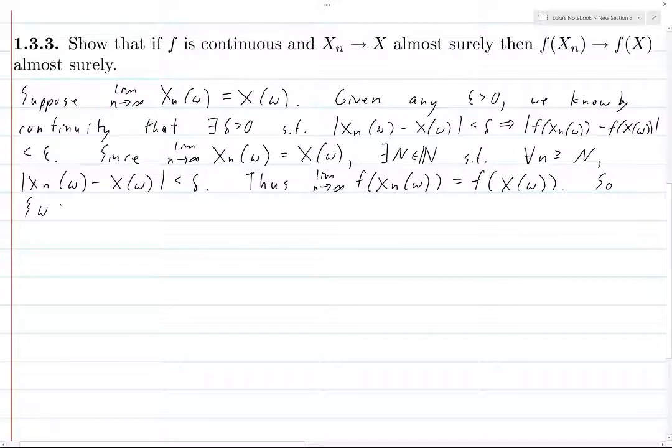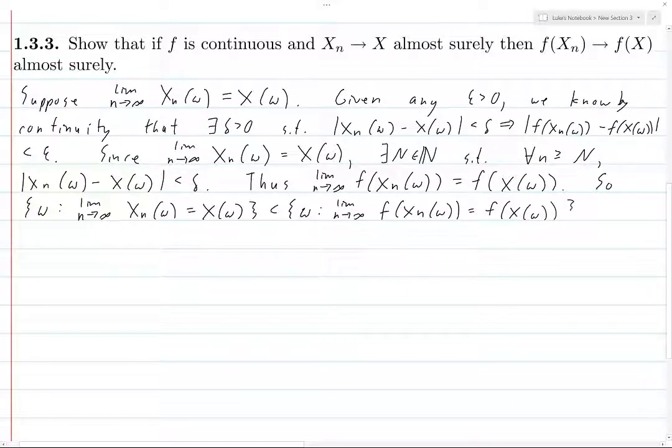So what does this tell us? This tells us that if we're given any omega such that the limit as n goes to infinity of x_n of omega equals x of omega, then this omega also satisfies the limit as n goes to infinity of f of x_n of omega equals f of x of omega. That is to say, this set on the left here is a subset of the set on the right here.